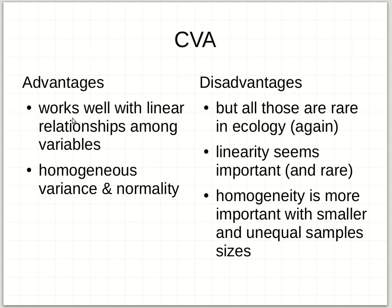Canonical variant analysis works well when you have linear relationships — same basic advantages as PCA. The disadvantage is that data playing nice with linearity is rare in ecology, and homogeneity is still a pretty big problem, especially with small or unequal sample sizes. So we need a method that works when we don't have to sweat these classic statistical assumptions.